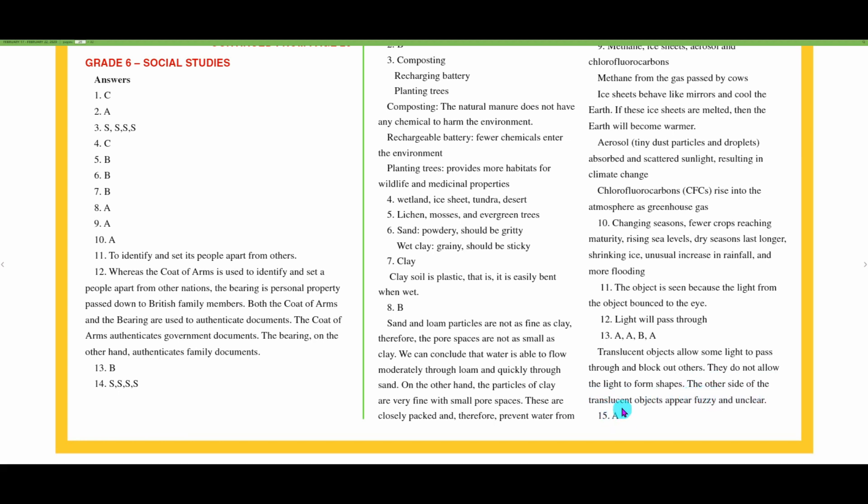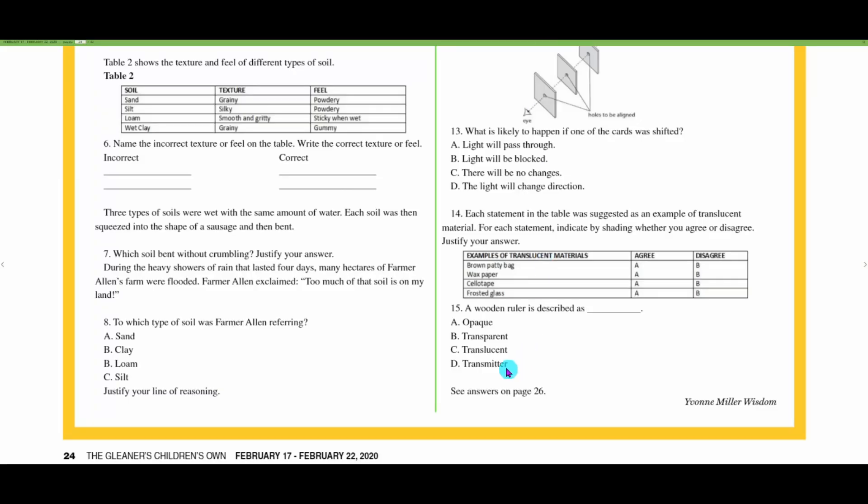This whole question at number fourteen has to do with how light behaves when it comes in contact with certain materials. If it's opaque, light does not pass through. If it's translucent, it allows light to pass through but scatters the light. If it is transparent, all the light passes through and a clear image can be seen on the other side. Number fifteen: the wooden ruler is opaque.